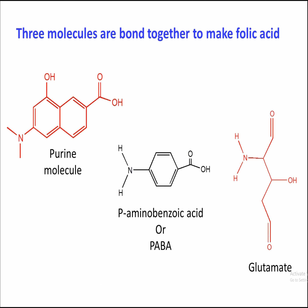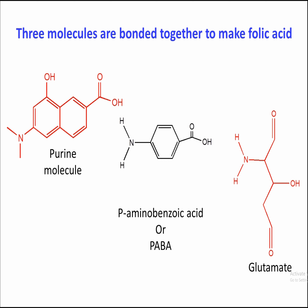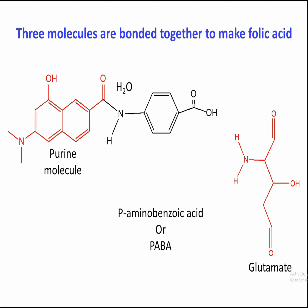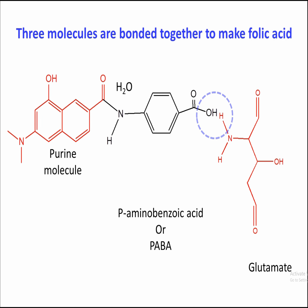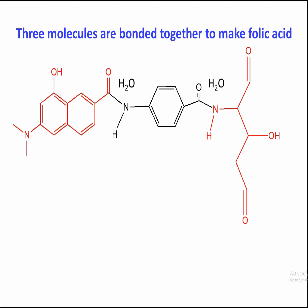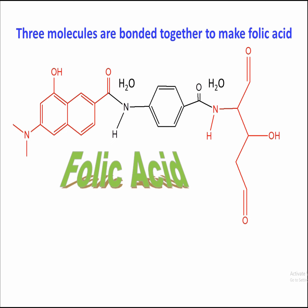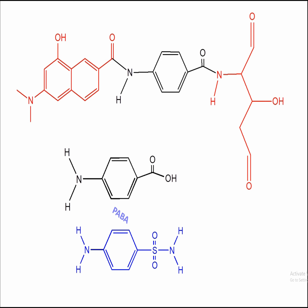Three molecules are bonded together to make folic acid: a purine molecule, paraaminobenzoic acid, or PABA, and glutamate. In the reaction, each part of the synthesis splits out water molecules. This is the reaction that produces folic acid.